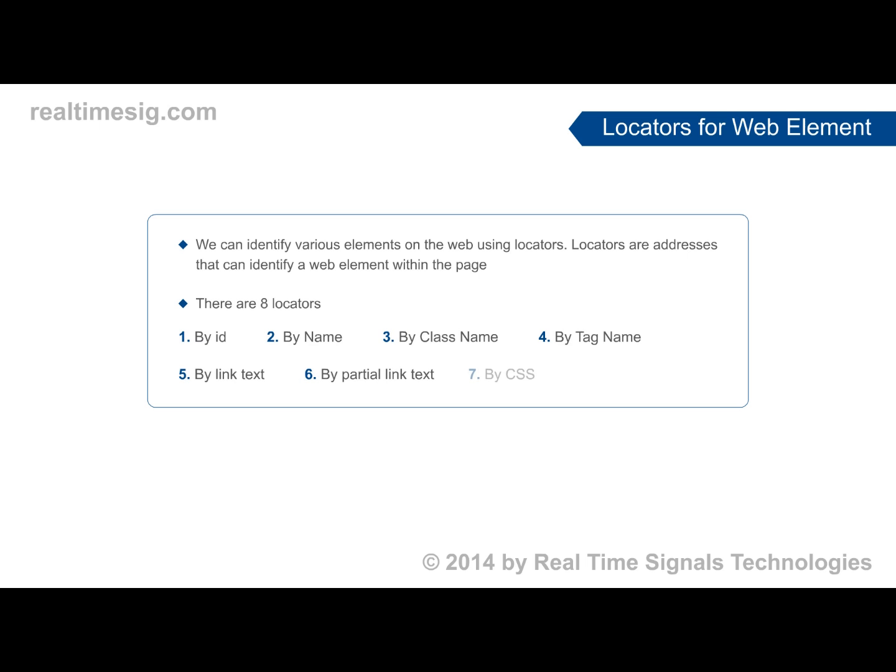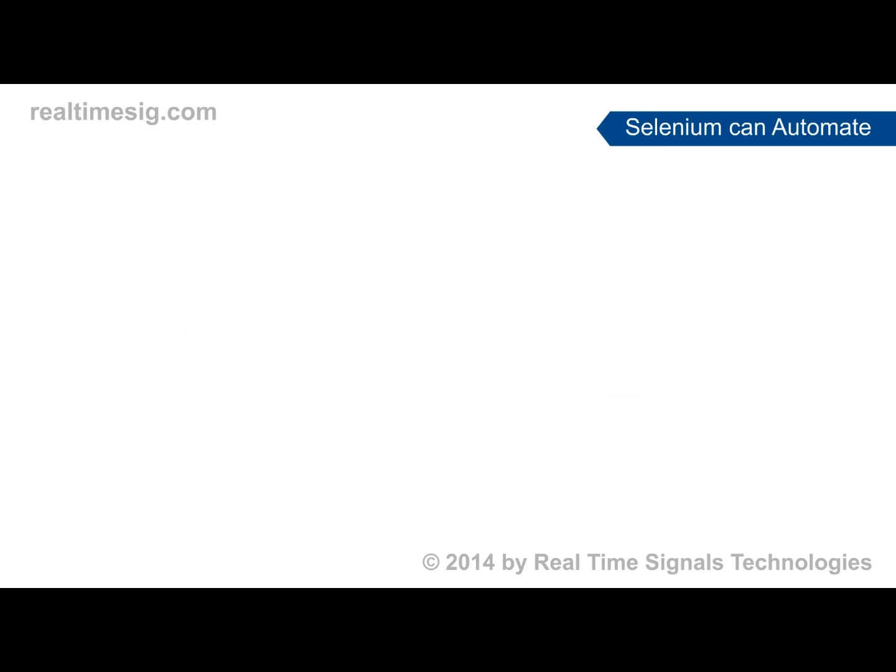Selenium also provides locators like Link Text, Partial Link Text, CSS, and XPath. All these locators help us locate a particular element on the given web page. We can also use Firefox plugins like Firepath or Firebug, or Chrome tools for locating these elements.